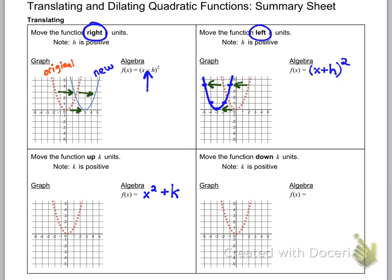If we want to move a function up, then we need to add k to the outside of the function, and that is what it looks like on the graph and in the algebra, where k is how much we're moving it up by. Notice each point moves up by the same amount, and I want you to try the last one on your own.